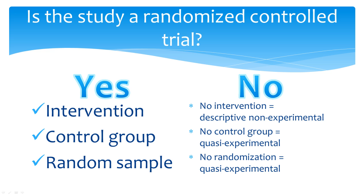You may also see this type of study called a non-randomized trial. Many randomized strategies exist, but basically if a study is randomized, it means that everyone who entered the study had an equal chance of receiving the intervention under study. You may see some studies indicate that they were partially randomized; these studies still do not count as true experiments. If your study has a random sample, control group, and intervention, then it is a randomized controlled trial.